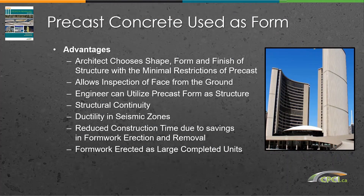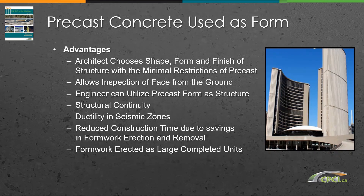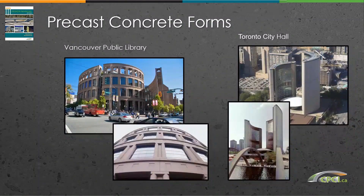Precast can also be used as stay-in-place forms for buildings. The architect can determine the shape, form, and finish from the many finishes available. Precast forms allow inspection of the building finish at an early date as it can be viewed on the ground prior to installation. The structural engineer can use the precast form sections to contribute to the building sections, providing structural continuity and enhancing ductility in seismic zones. The use of precast forms also reduces construction time by saving formwork erection and removal time. Notable projects include Toronto City Hall and the Vancouver Public Library.